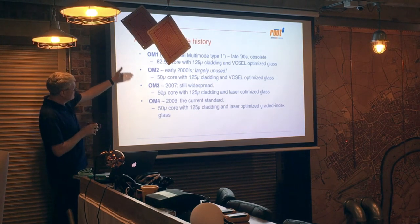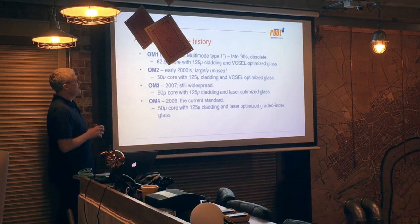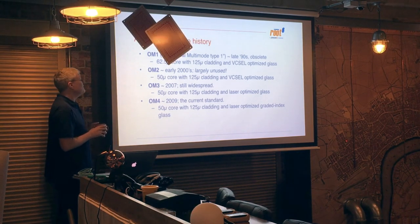Here are the multimode standards as they've developed. OM1 — optical multimode type 1 — came out in the 90s and is now pretty much considered obsolete. It used a 62.5-micron core rather than the 50 we know today, optimised for VCSELs. OM2, early 2000s, never really caught on — I've never seen any infrastructure using it. It was neither fish nor fowl: a 50-micron core but pretty much the same technology as OM1.